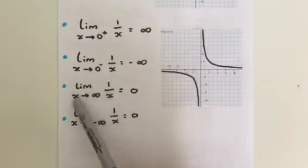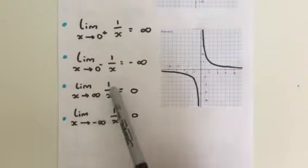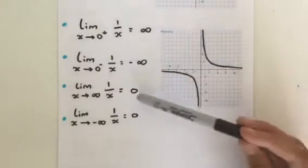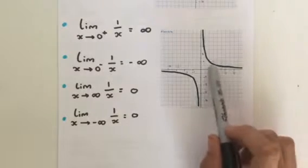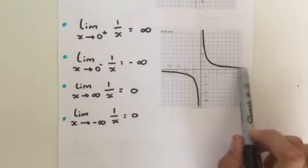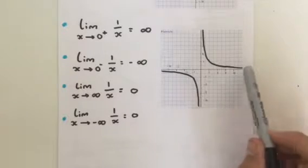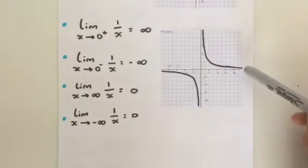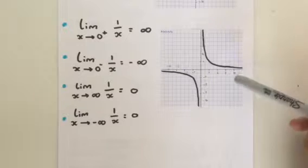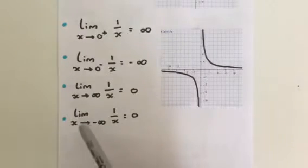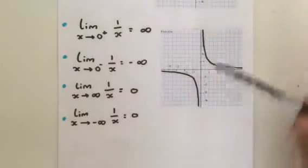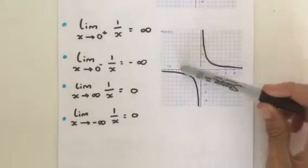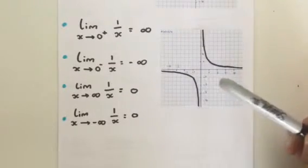Then the limit as x approaches infinity of one over x is zero — as x goes to the right toward infinity, the limit eventually goes to zero. Similarly, the limit as x approaches negative infinity of one over x equals zero — x going left toward negative infinity also gives zero.